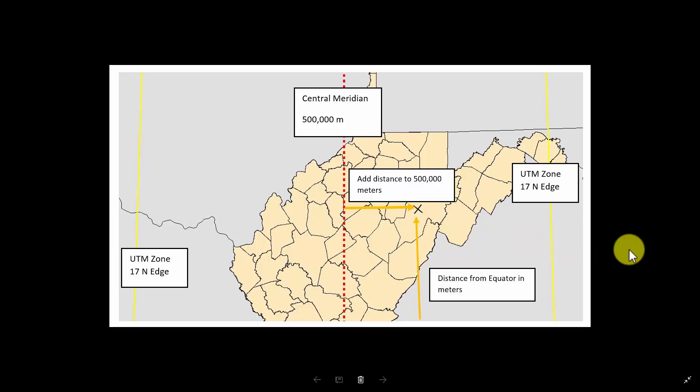In summary, the UTM system divides the Earth into 60 zones. Each zone is projected to a transverse cylinder. A coordinate or position is defined using easting and northing. The northing is defined relative to the distance from the equator, whereas the easting is defined relative to the distance from the central meridian in each zone.